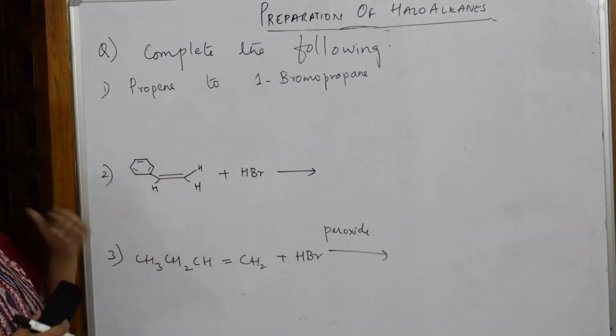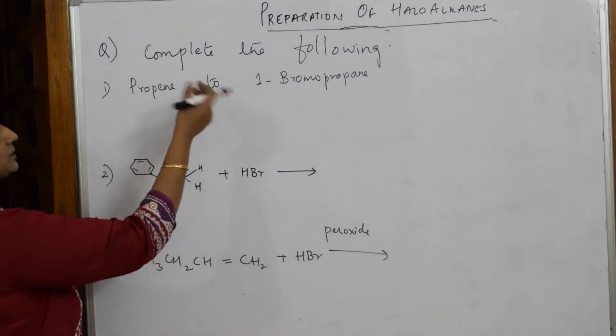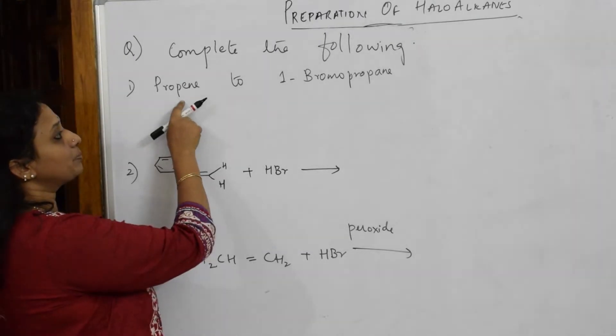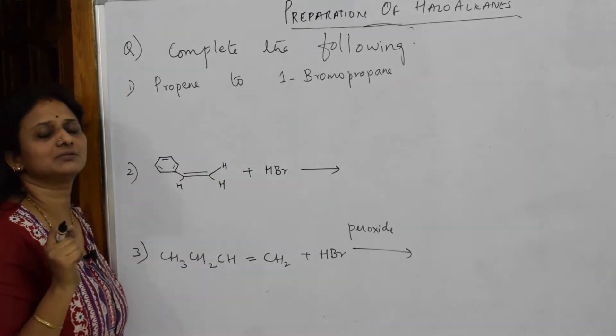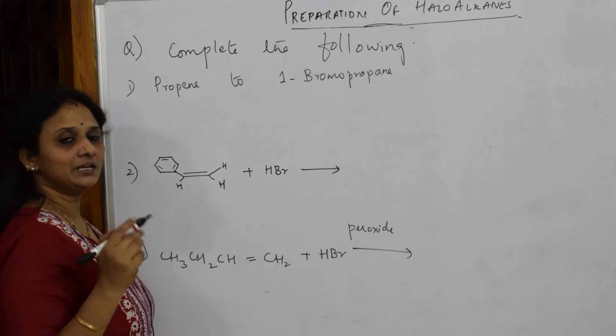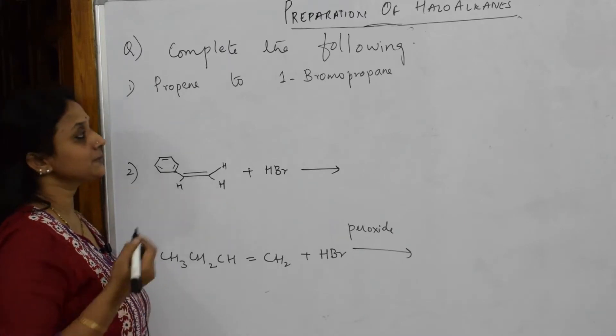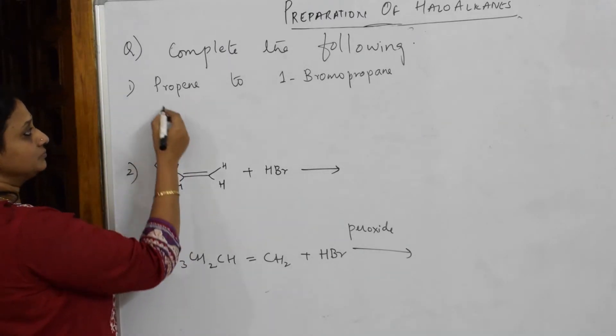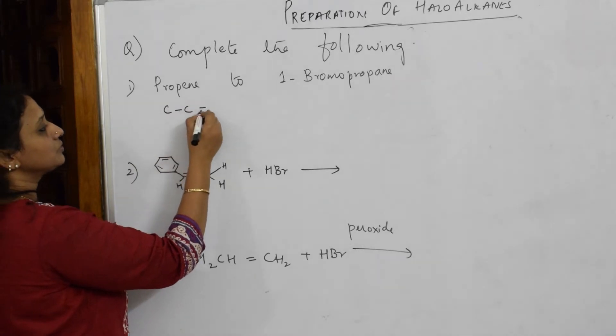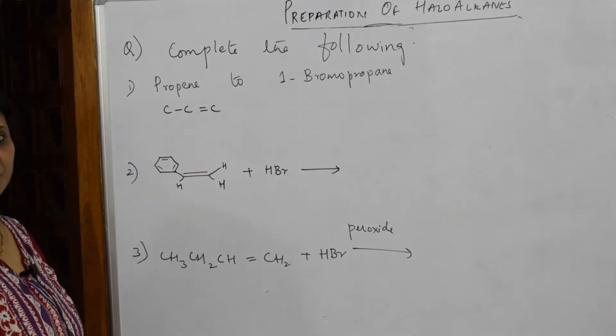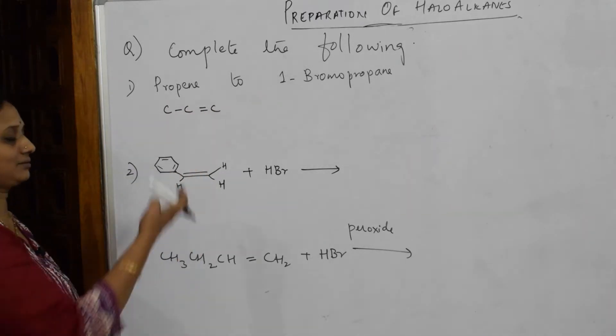So now, if this particular equation is given to me, complete the following: propene to 1-bromopropane. So it's a basic conversion which I've explained. We'll be doing more conversions. So propene - one, two, this is propene. One propene, it's understood.